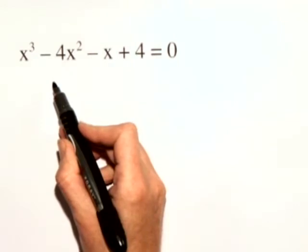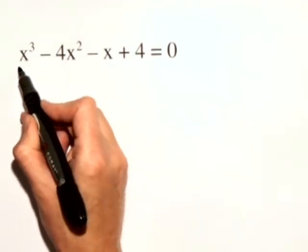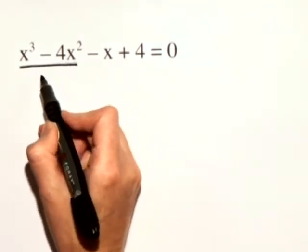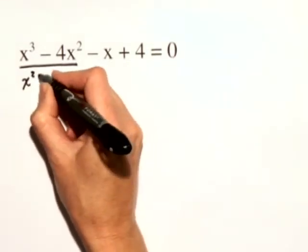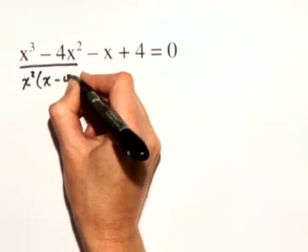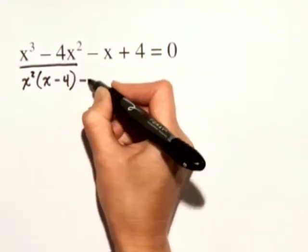Since we have four terms, let's try factoring by grouping. With our first two terms, we have a common factor of x squared. When we factor that out, we have x squared times the quantity x minus 4, minus,